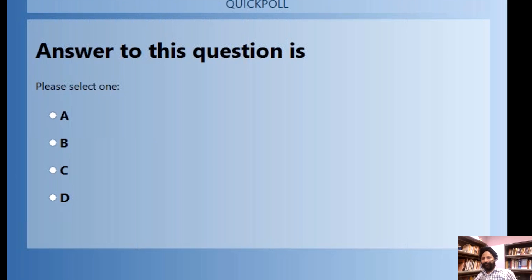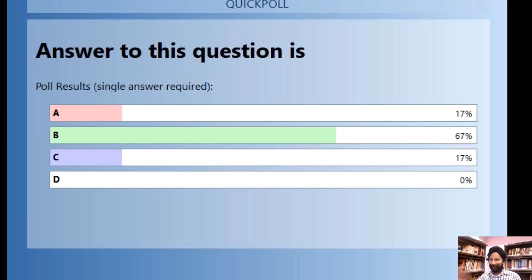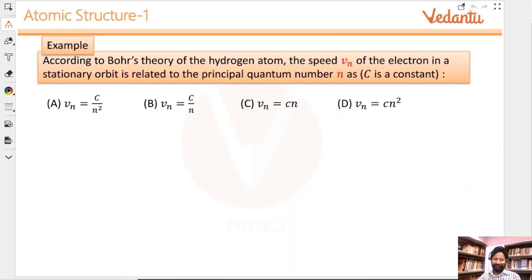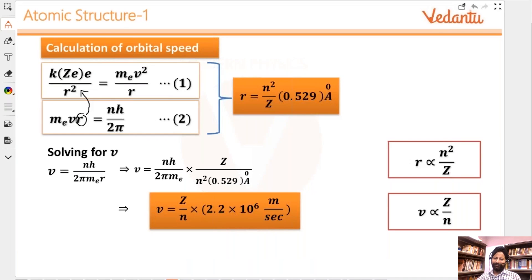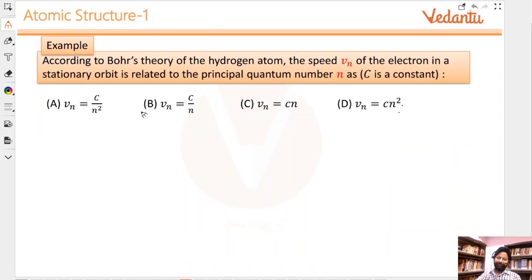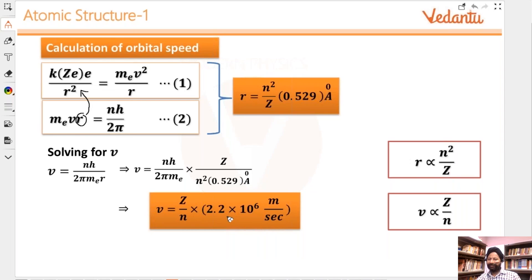Good, most of the answers are right, minor answers are wrong. This is based on the previous slide. Most answers are right - it's option B. If you go back to the previous slide, isn't this exactly what we studied just now? Velocity is inversely proportional to n. Does everybody understand it now?